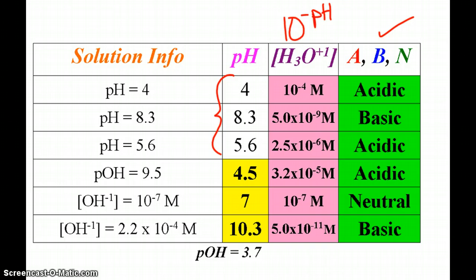Remember, that's 10 to the negative pH. So if your pH is simple, like 4, then your concentration is 10 to the negative 4, capital M, molarity.